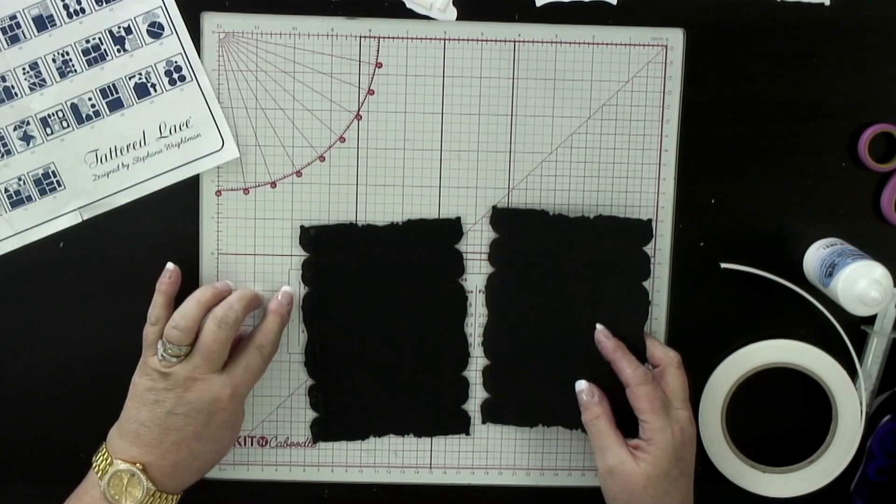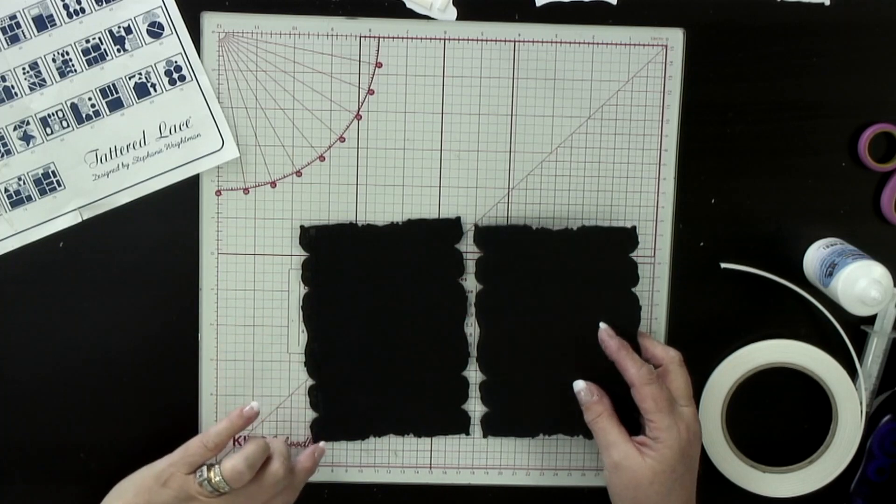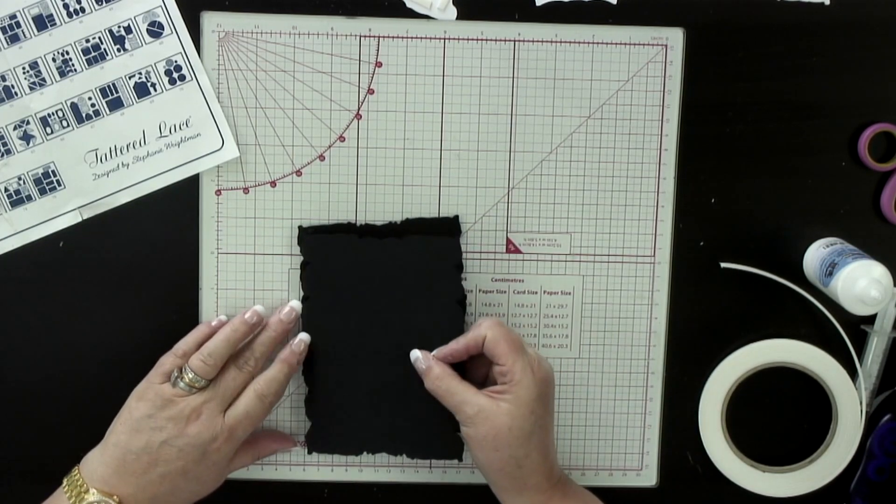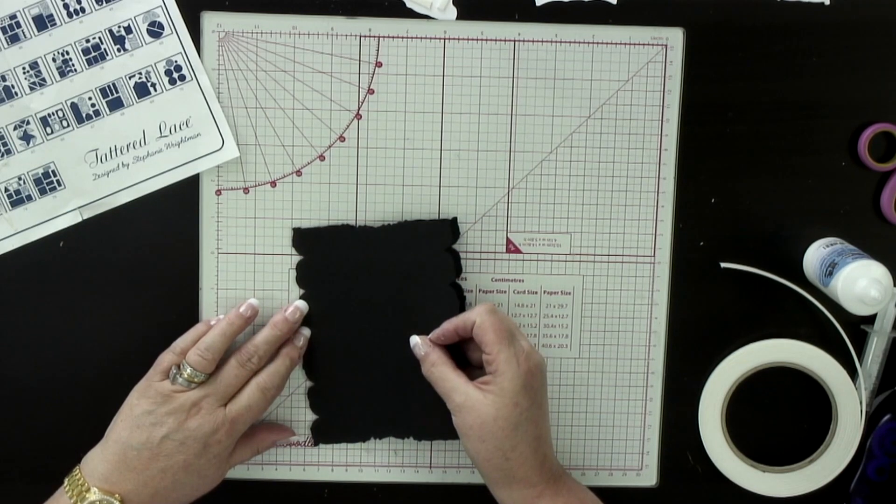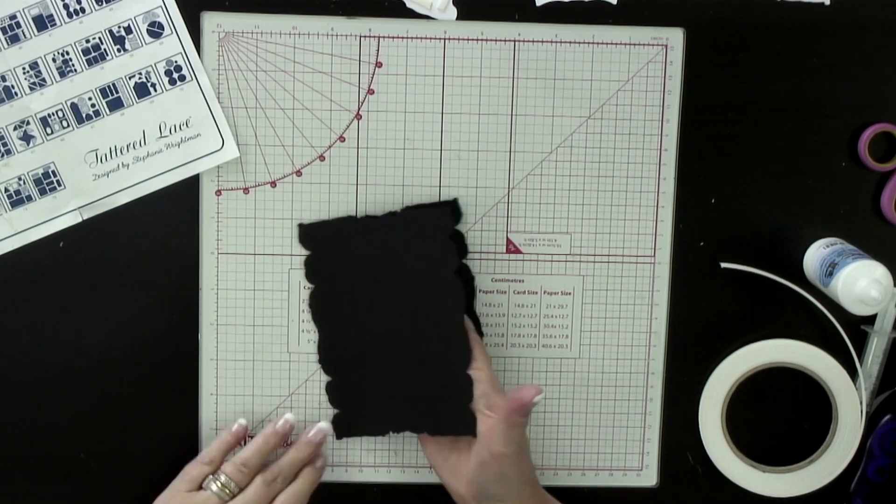This is where red liner tape really comes into its own. So I've got a score line just down this edge. I'm going to take the same card but without a score line and lay it over the top. That is creating my card shape.